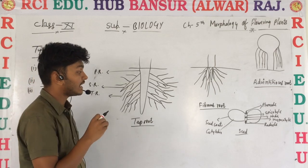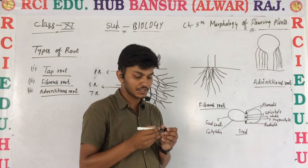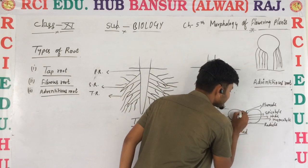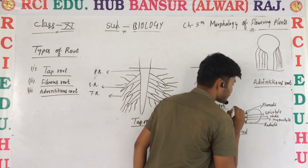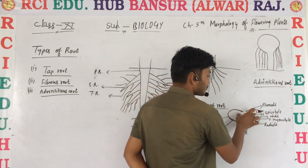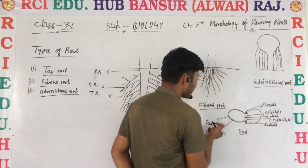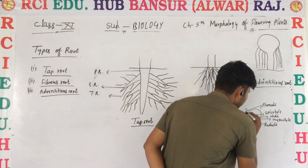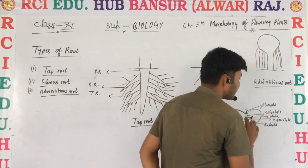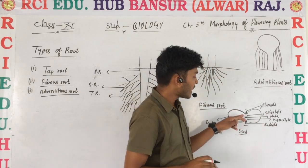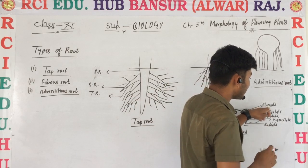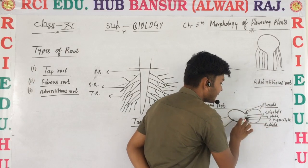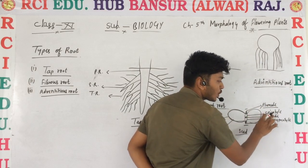First we are talking about seed structure. The seed is surrounded by a seed coat. This structure is known as seed coat. These are known as cotyledons. This structure is known as embryonal axis. The topmost part is known as plumule. The lowermost part is known as radical.